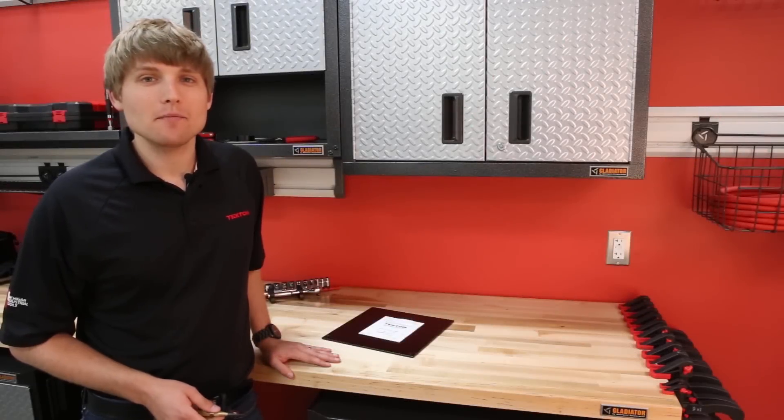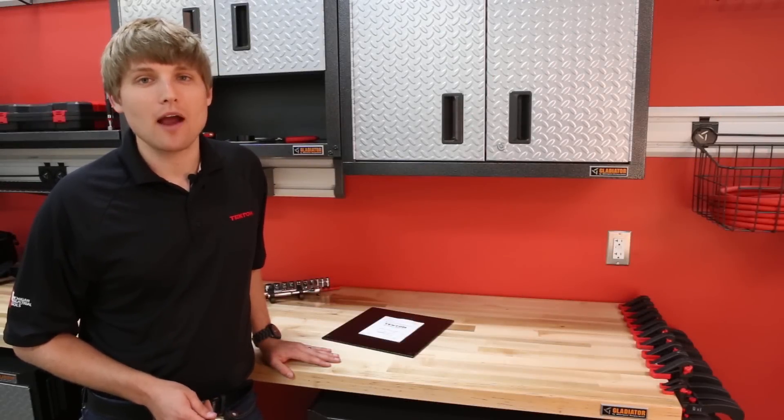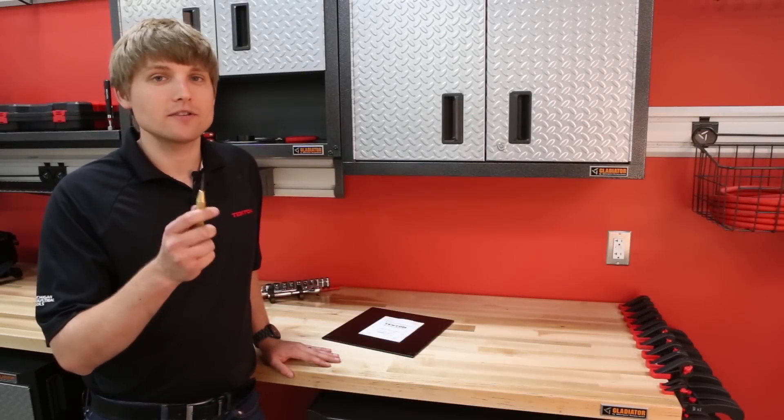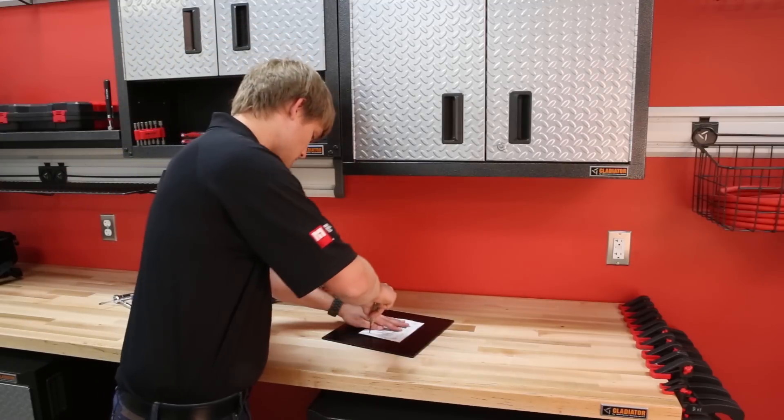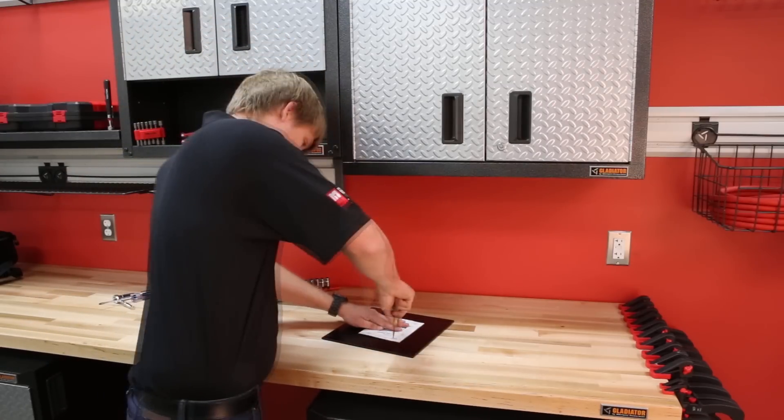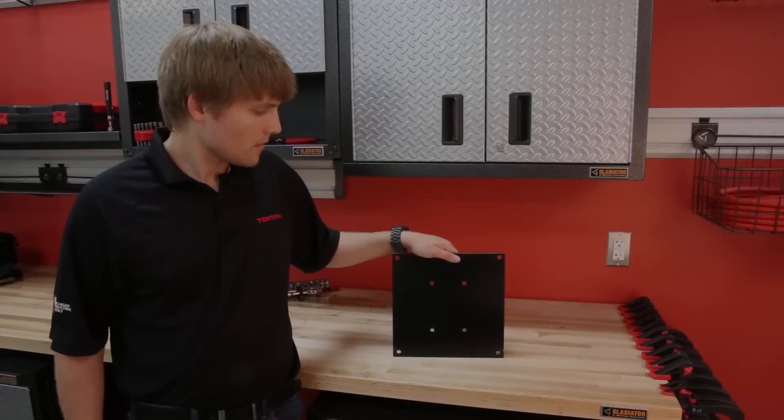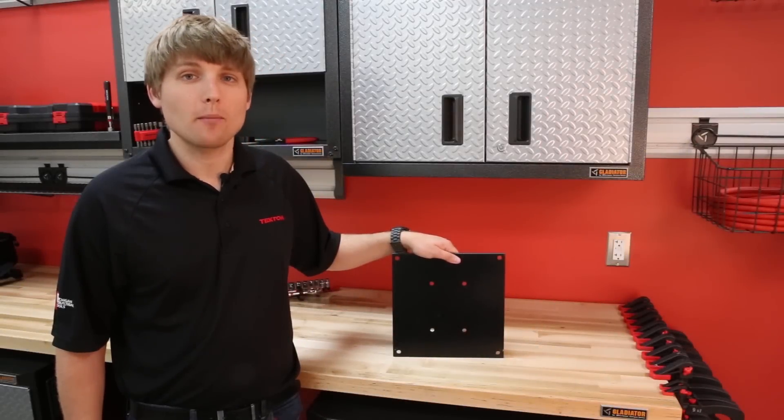We cut out the mounting template and centered it on the mounting bracket. The next step is to use a center punch to mark the drill spots. We've drilled our holes in the mounting bracket, and now we're ready to install it on the wall.